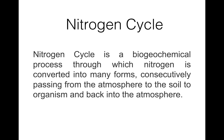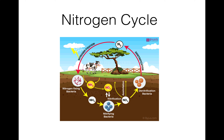What is the nitrogen cycle? The nitrogen cycle is a biogeochemical process through which nitrogen is converted into many other forms, consequently passing from the atmosphere to the soil, to organisms, and then back into the atmosphere. In other words, the nitrogen cycle transforms the inert nitrogen present in the atmosphere into a more usable form for living organisms.